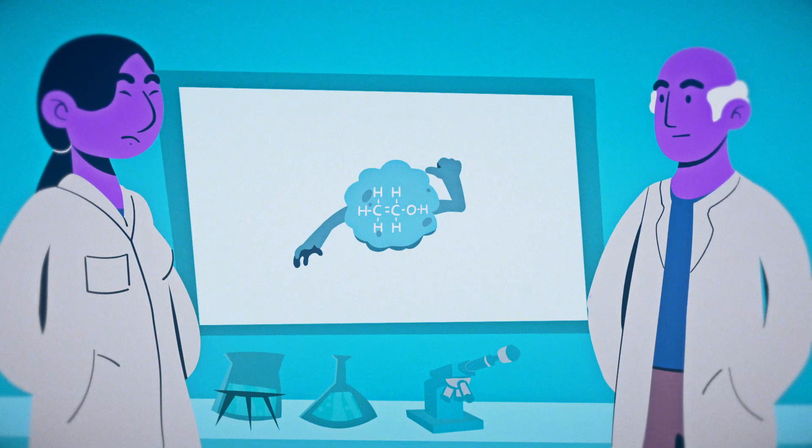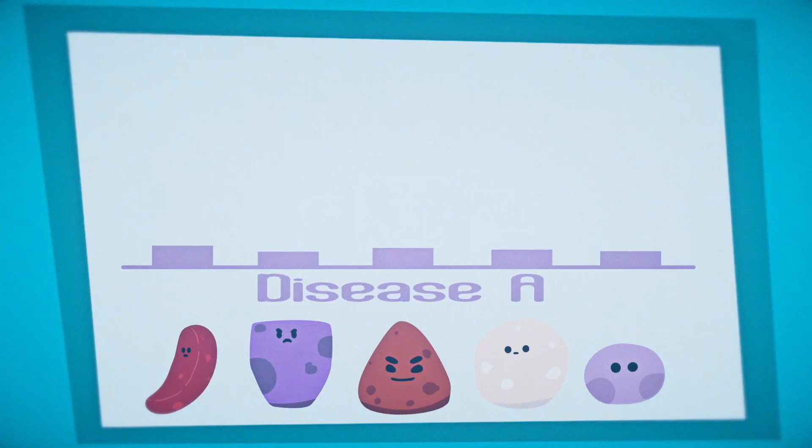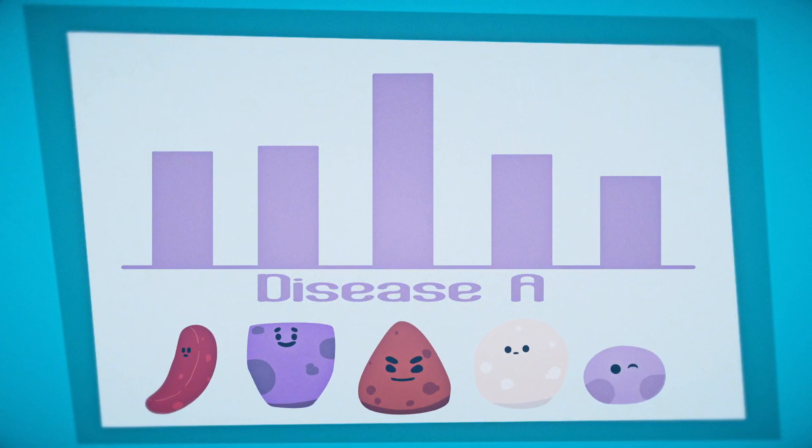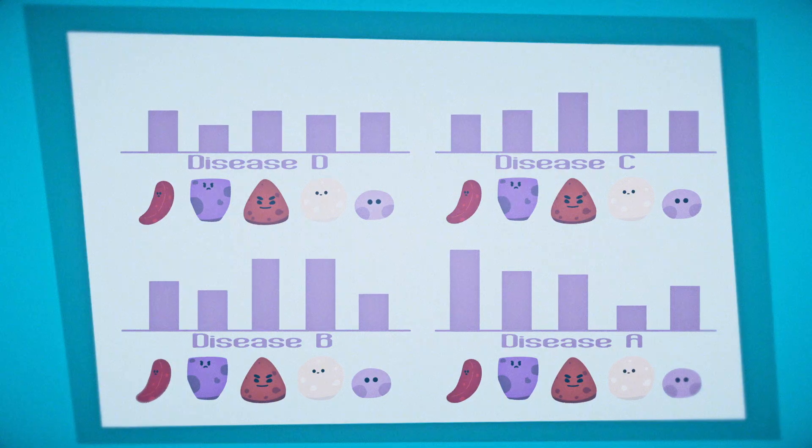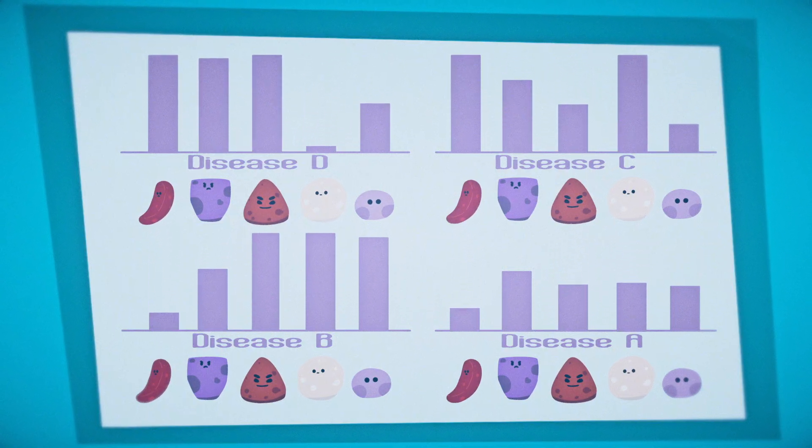To identify diseases, researchers need to look at a set of tens of compounds in the breath. A given disease may cause some of these compounds to increase or decrease in concentration, while others may not change. The profile is likely to be different for every disease, and could even vary for different stages of the same disease.